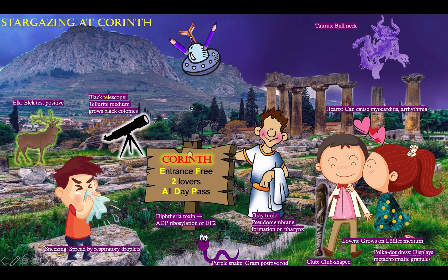After all this stargazing, we have this UFO that decided to show up. The UFO has these purple pencil antennas to remind you that penicillin is the treatment, along with this antibody which is for antitoxin — because antitoxins are antibodies that bind the toxin. So the treatment is penicillin plus antitoxin. And we see a syringe here, and that is to remind you that this can be prevented by vaccination through the DTaP vaccine.